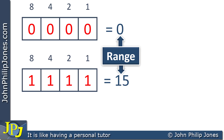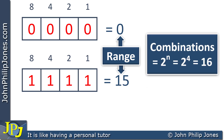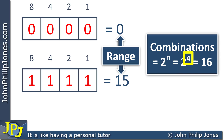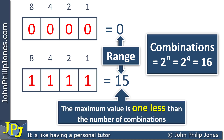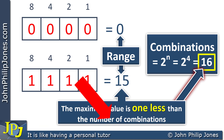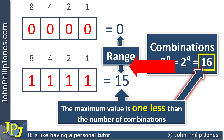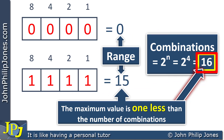In a previous video, we discussed combinations that are possible with a nibble, and we use the formula 2 to the n, where n is the number of bits. For a nibble, the number of bits is 4, and 2 to the 4 is clearly 16. The maximum value is 1 less than the number of combinations, which we know to be 16. Zero to 15 gives us 16 combinations.